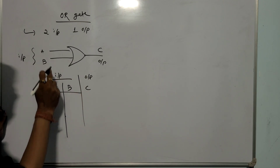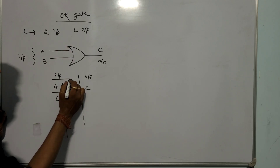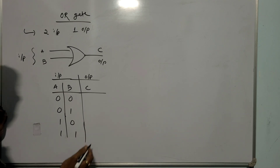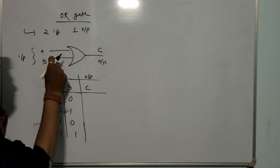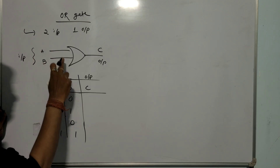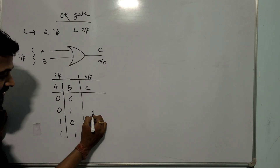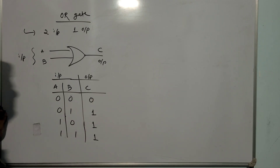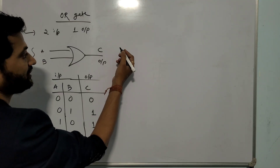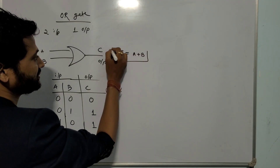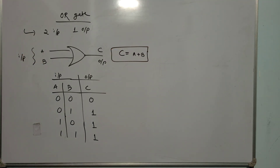Since there are two inputs, there will be four combinations: 0-0, 0-1, 1-0, and 1-1. If any one of the inputs is high, then the output will be high. So for combinations 0-1, 1-0, and 1-1 you get output 1, but for 0-0 you get output 0. Mathematically, C equals A plus B.